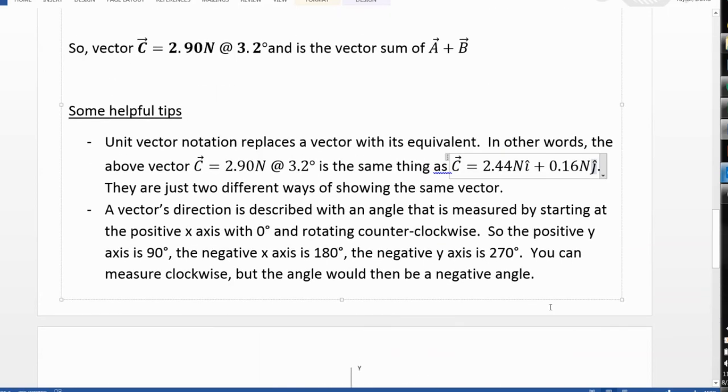Now, some helpful tips to remember. Remember that this is called magnitude angle notation right here. And that is the same thing, or it represents the same vector as the unit vector notation shown here. These are just two different ways of describing the same vector. Also, we talked about the angle. So, if you start at the positive x-axis with zero degrees and rotate counterclockwise, then your angle is positive. But if you go clockwise, your angle then is a negative angle.